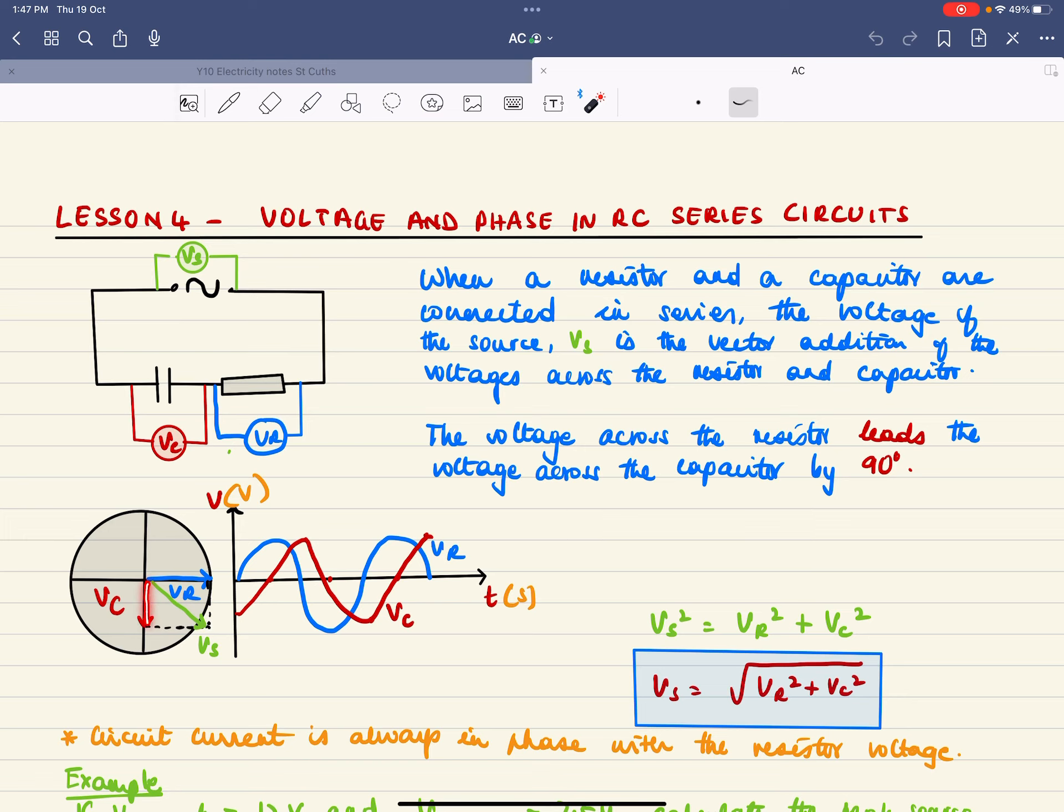The voltage across the capacitor lags 90 degrees behind the voltage of the resistor. When the voltage across the resistor is zero, the voltage across the capacitor is a maximum but negative, so you have your curve for the capacitor going that way.